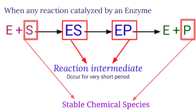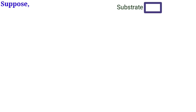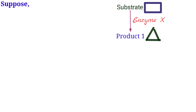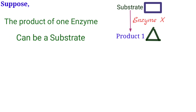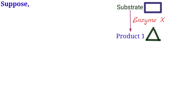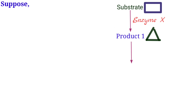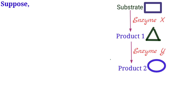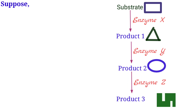The substrate and product are known as stable chemical species. For example, a square-shaped substrate is acted on by enzyme X to form a triangle-shaped product. The product of one enzyme can be the substrate for another enzyme. The triangle product is used as substrate by enzyme Y, which produces a circular-shaped product, which then acts as substrate for enzyme Z.